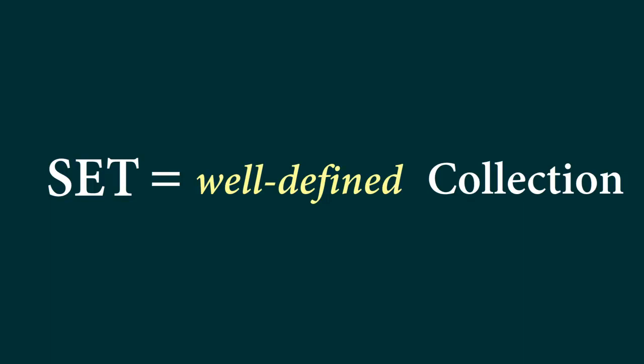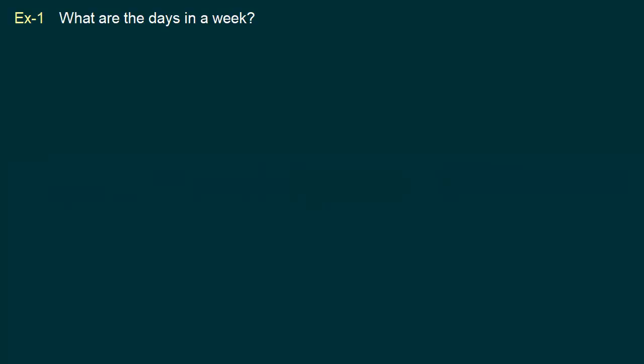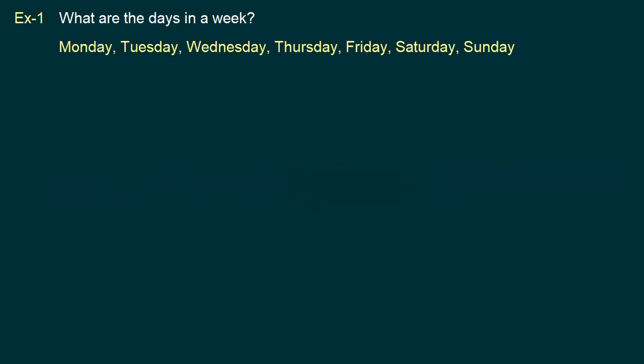Now let's take a look at some examples which will help us clarify this point. Our first example is: what are the days in a week? We all know the days are Monday, Tuesday, Wednesday, Thursday, Friday, Saturday, and Sunday. These are the days in a week, so our set consists of these things.